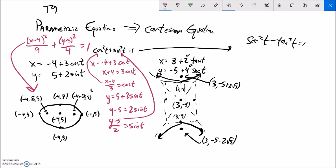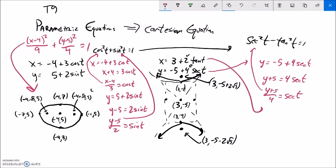Do something similar over here. I have secant squared minus tangent squared. So I'm going to take this y and solve for secant. So add 5 to both sides. Divide by 4. I'm going to plug that into the secant spot. Take the x. Solve it for tangent. So subtract 3. Divide by 2. I can plug that into the tangent spot.